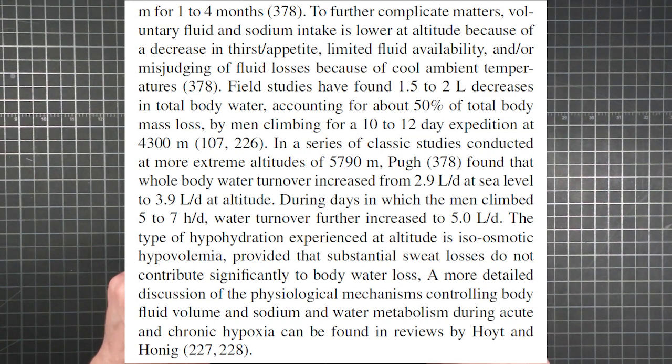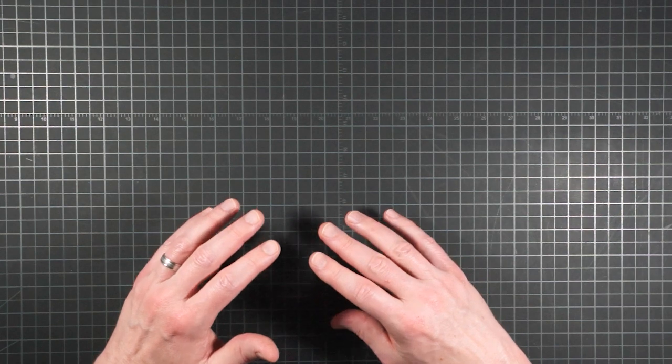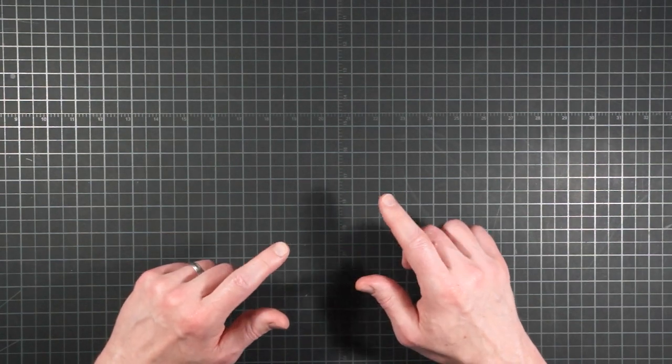The cool temperatures can make you misjudge fluid losses. Limited fluid availability might provoke you to ration your drinking, and you may experience a decrease in thirst or appetite. Fluid turnover can increase by a liter of water at altitude, and if you're putting in several hours of work while up there, it can increase by more than a liter beyond that. So for electrolytes, however, a crucial point is made. These increases are isoosmotic.